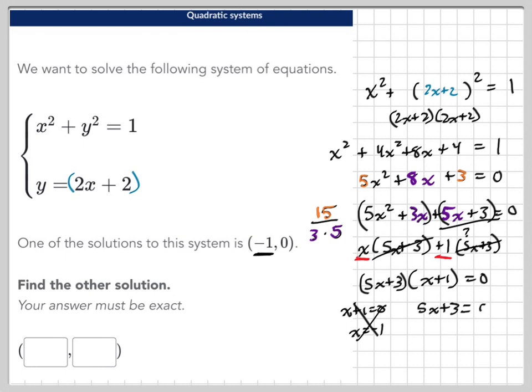And so the other factor, 5x plus 3, when we set that equal to 0, subtract 3 from both sides and then divide both sides by 5, we get negative 3 over 5. That's going to be our x in our other point.